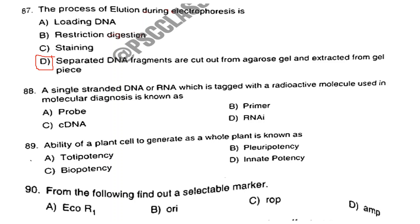Question number 88. A single-stranded DNA or RNA which is tagged with a radioactive molecule used in molecular diagnosis is known as? Answer is Option A: Probe. Question number 89. Ability of a plant cell to generate a whole plant is known as? Answer is Option A: Totipotency. Question number 90. From the following, identify a selectable marker. The answer is Option D: AMP (ampicillin resistance gene).